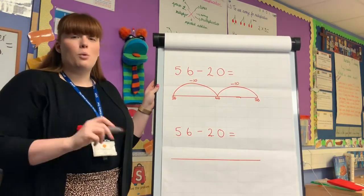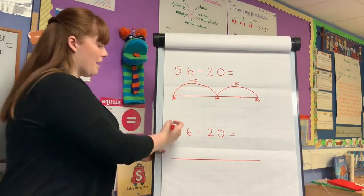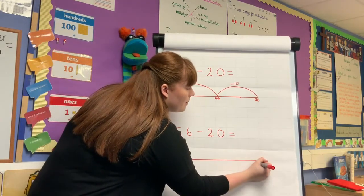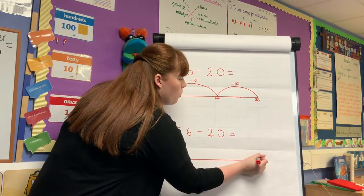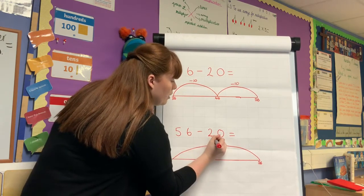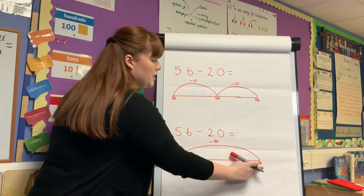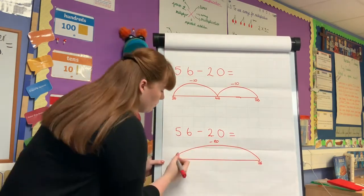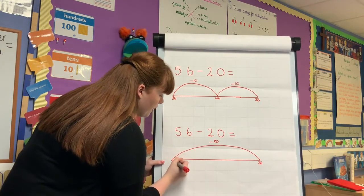After this we move on to making one solid jump. So again I put my fifty-six at the end and I would do one solid jump of subtracting twenty. Knowing that fifty-six take away two tens will give me thirty-six.